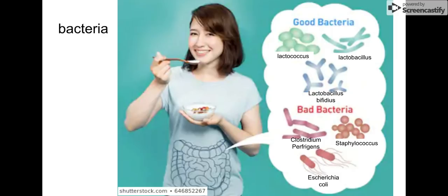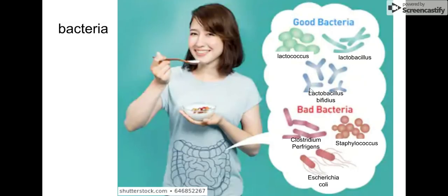Now, bacteria. Bacteria are going to be a prokaryotic organism. They are single-celled, but can be colonial, meaning they live together as a clump. Most bacteria in our lives are going to be good or neutral. Some bacteria are bad, and those are going to cause infections and diseases. Some examples would be the lacto-family of bacteria that live inside of our bodies and help us digest our food. Some bad diseases would be clostridium, staph, and E. coli, which can cause infections or make us sick.